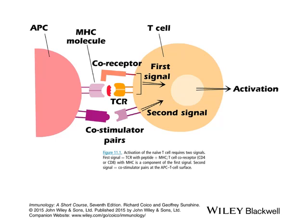CD4 and CD8 are co-receptors, and there are a bunch of co-stimulatory molecules like ICOS and CD28. CD28 happens to be one of the most important molecules. CD28 is present on the T cell, and the corresponding receptor on the antigen presenting cell that binds to CD28 is B7 — B7.1 or B7.2. These are the different co-stimulatory pairs, and these two signals will get the cells activated.